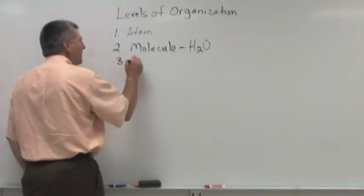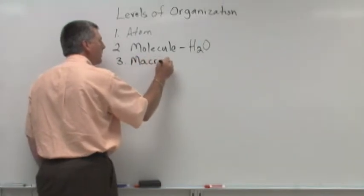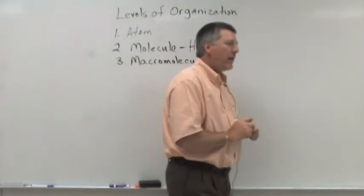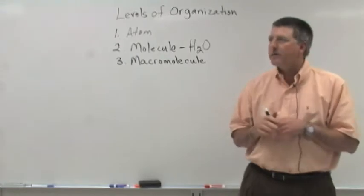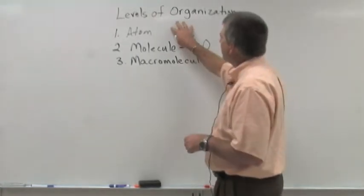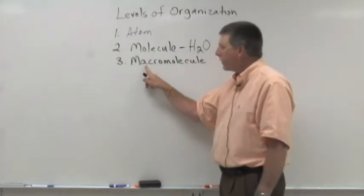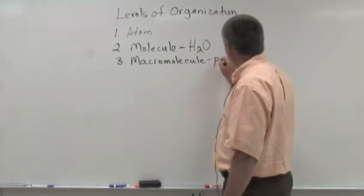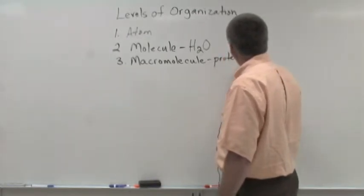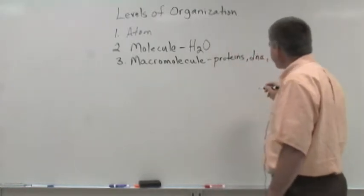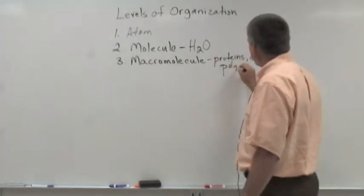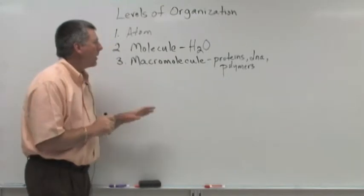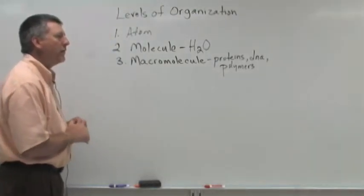So the next level of organization I like to include is the macromolecule level. And the macromolecule level just recognizes that there are some molecules especially important to life that are very large molecules. That's what macro means is large. Macromolecules include things like proteins, DNA, polymers. And that's in an upcoming chapter where we'll learn about the macromolecules important to life.